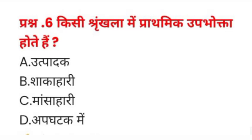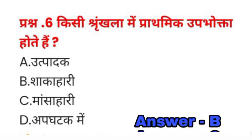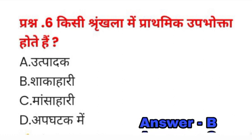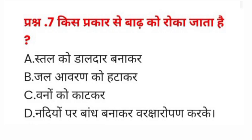Question number six: किसी श्रृंखला में प्राथमिक उपभोगता होते हैं — A) उत्पादक, B) शाकाहारी, C) मांसाहारी, D) अपघटक। इसका सही जवाब B) शाकाहारी होगा।